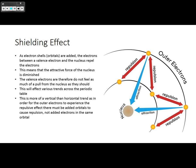So this is more of a vertical trend than a horizontal trend, as in order to have that inner to outer electron shell repulsion, you have to be adding orbitals, not just adding electrons in the same orbital. So this more affects things vertically than it does horizontally.